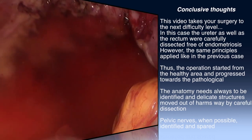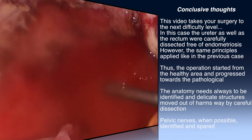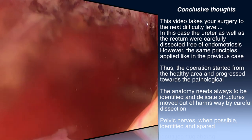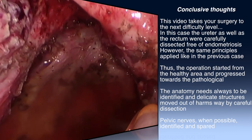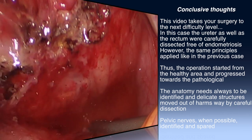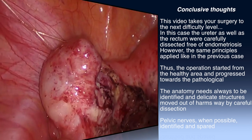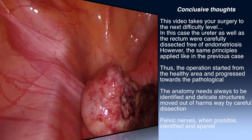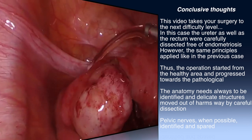Conclusive thoughts: this video takes your surgery to the next difficulty level. In this case the ureter as well as the rectum were carefully dissected free of endometriosis. However, the same principles applied as in the previous case: the operation started from the healthy area and progressed towards the pathological. The anatomy always needs to be identified and delicate structures moved out of harm's way by careful dissection. Pelvic nerves, when possible, should be identified and spared.